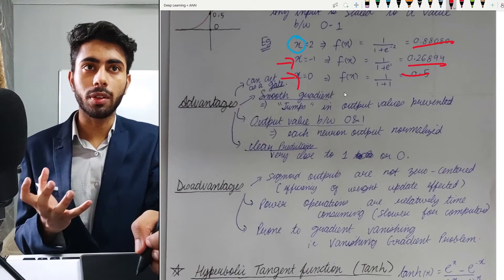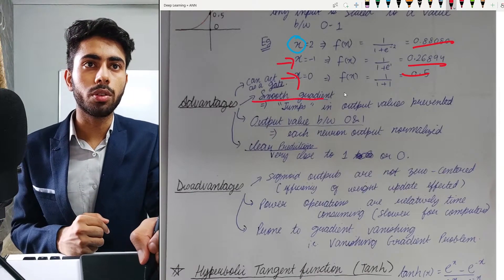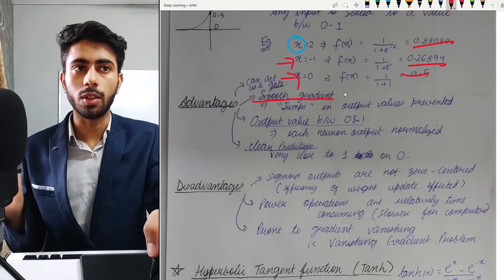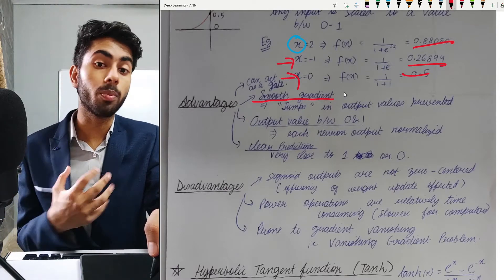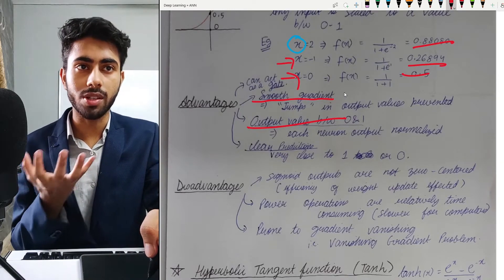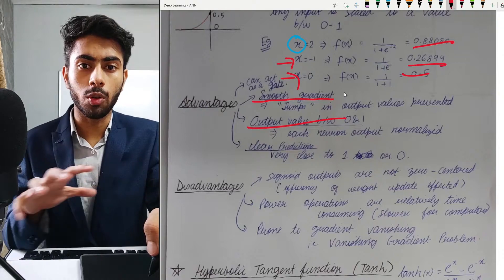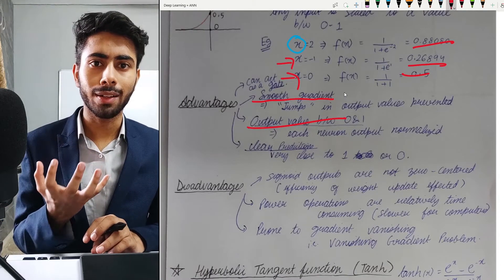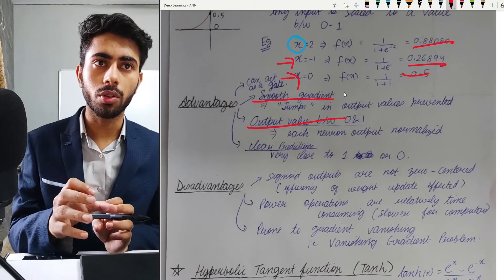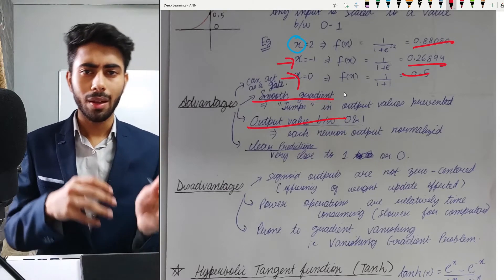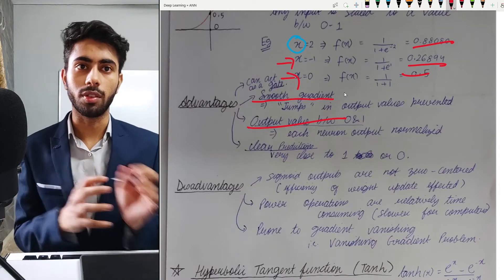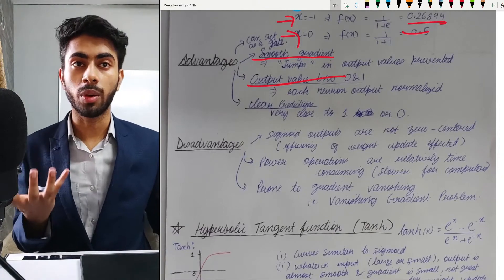One advantage of sigmoid is that the curve is very smooth, so there are no jumps between output values. Another advantage is that all output values are between 0 and 1, meaning the neuron output is normalized. A third benefit is that you get a clear-cut output — your output will be close to either 0 or 1, so whatever input you feed the neural network, the output will not be a random number.